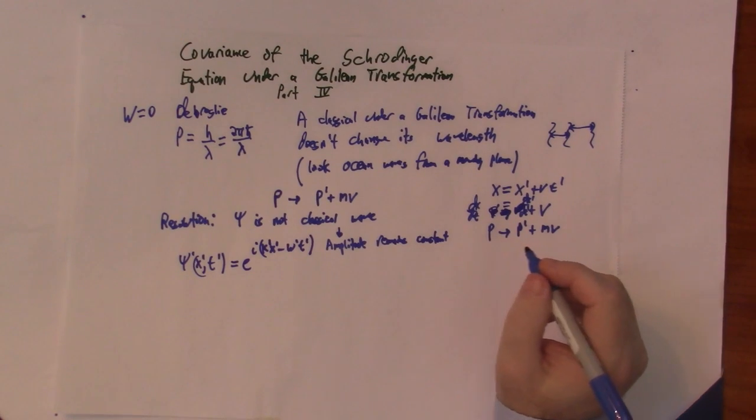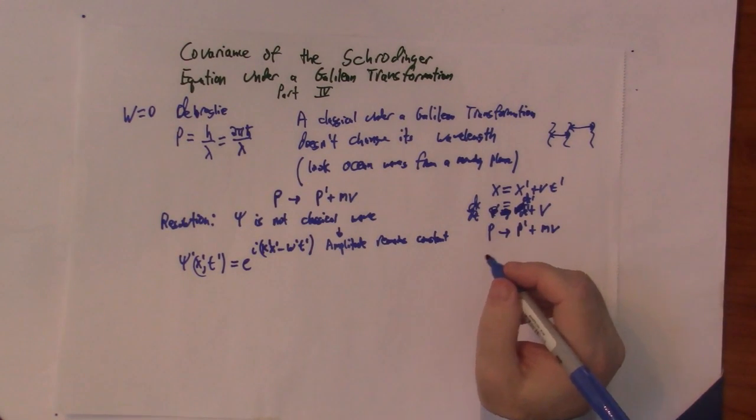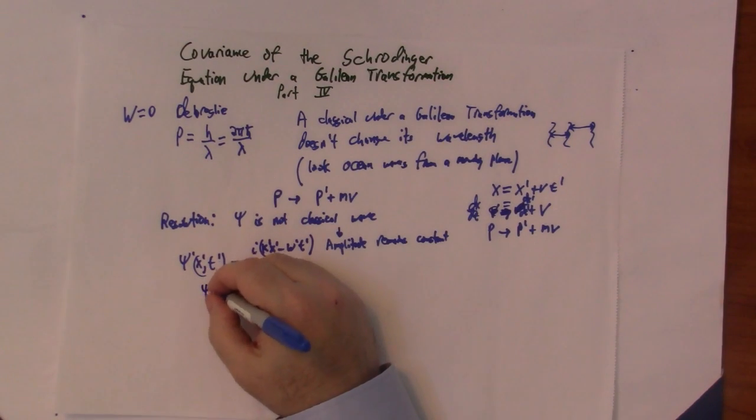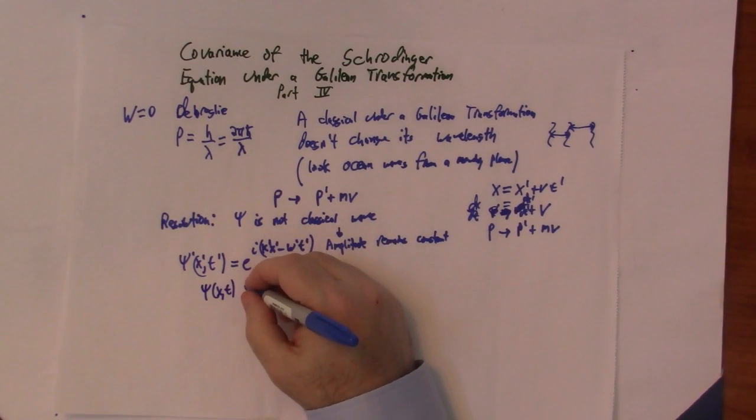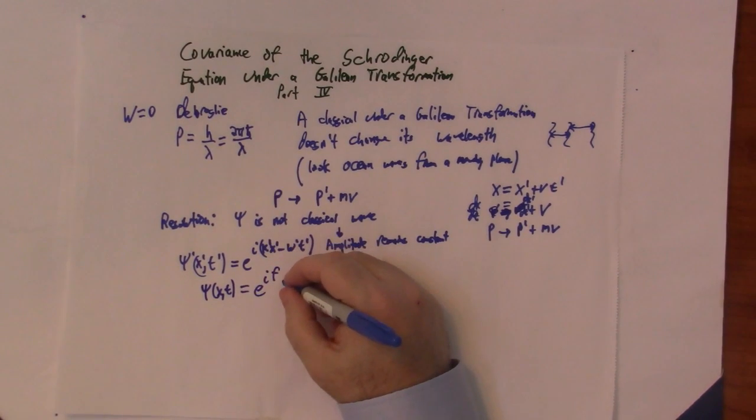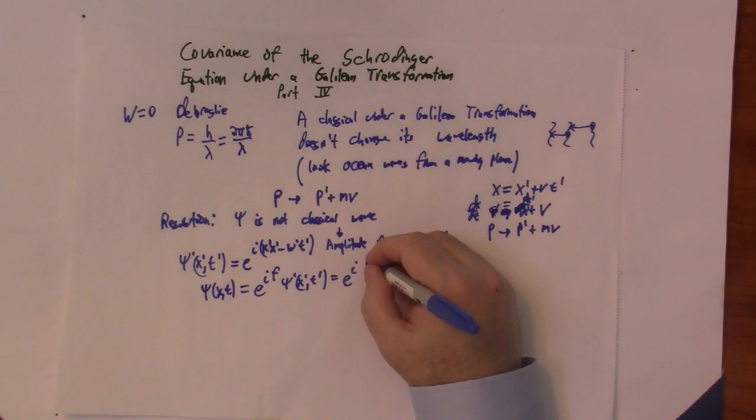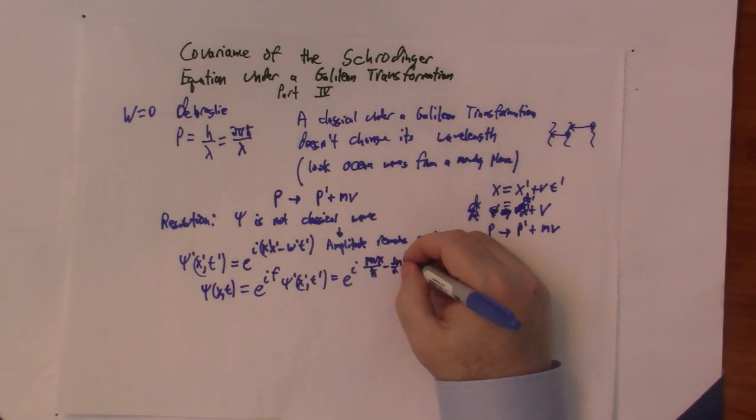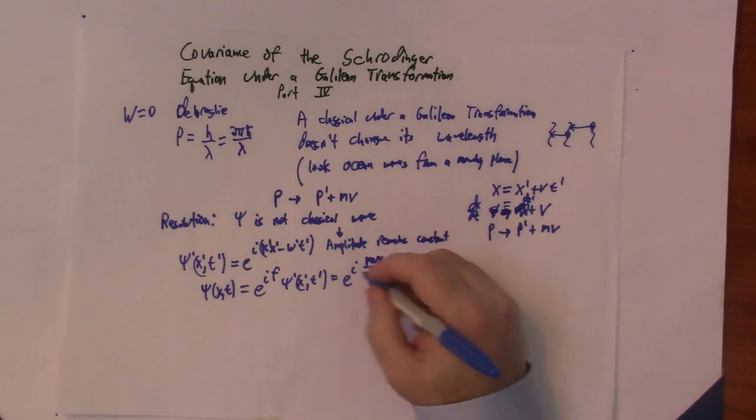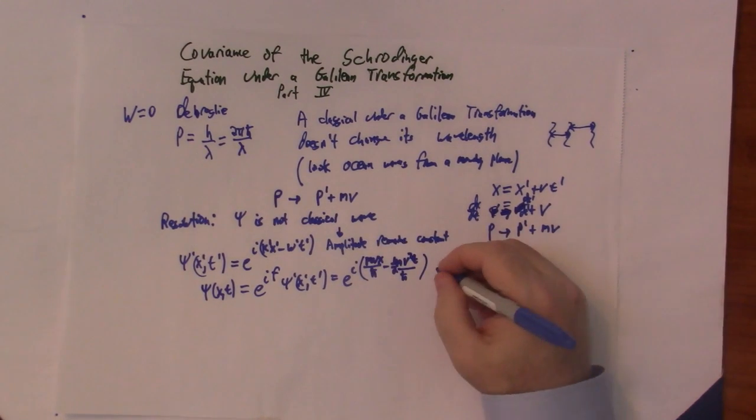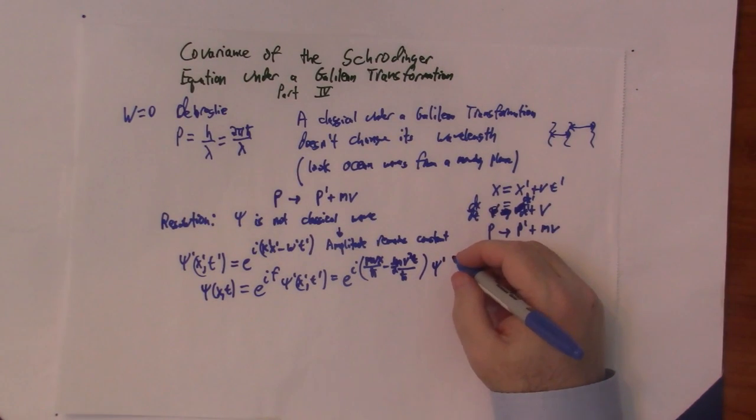Let's see how that behaves under a Galilean transformation. Well, we know that psi of x, comma t, so in the previous videos, is equal to e to the i f psi prime, x prime, comma t prime, is equal to e to the i, we derived the function f in the previous video, mvx over h bar minus 1 half mv squared t over h bar. And that multiplied by psi prime, of x prime, comma t prime.